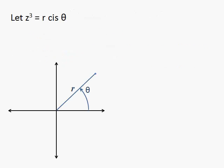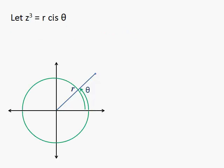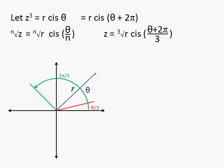Let's take this example. Z cubed is a particular complex number. Applying De Moivre's theorem to roots, we get the cube root of r and a third of the angle, so we can draw that in. The number is the cube root of r and the angle is now a third of the starting angle. But if we take 2π more, we get the same starting number written as r cis (θ + 2π). Applying De Moivre's theorem gives another solution: (θ + 2π) all over 3, which is θ over 3 plus 2π over 3. So our second solution is 2π over 3 further on from the first.